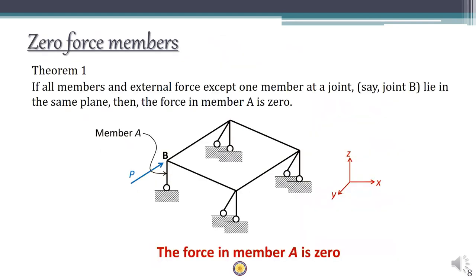Now let's see one of the most important aspects when analyzing space trusses. Space trusses have complicated arrangements with many members, so it is important to initially identify those members with zero force in order to reduce the complexity of the problem. There are some theorems to identify zero force members. The first theorem states that if all members and external forces except one member lie in the same plane, then the force in the out-of-plane member is zero.